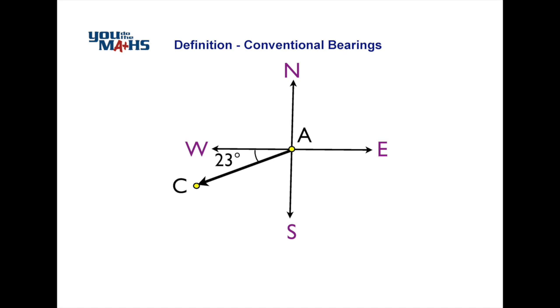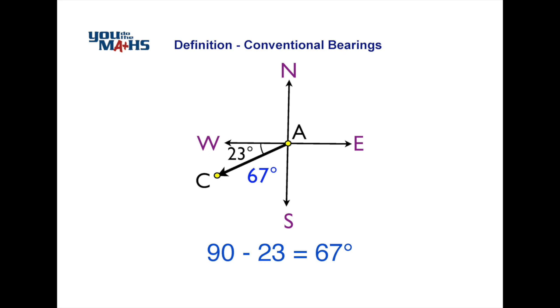We need to work out that angle and we can do that by subtracting 23 from 90 and that leaves 67 degrees. So we're heading in a southerly direction and then going 67 degrees towards the west. We can summarize that by saying south 67 degrees west.